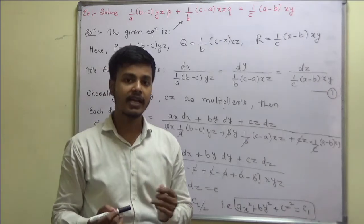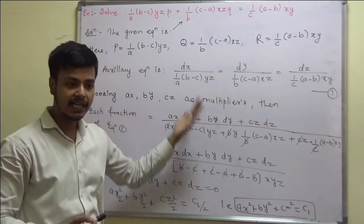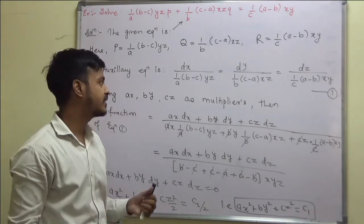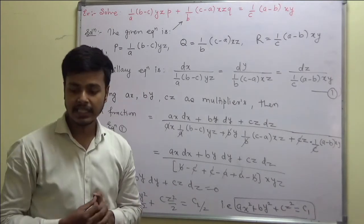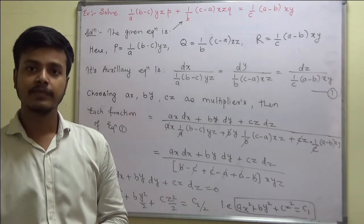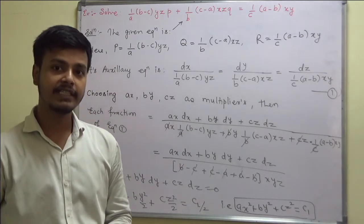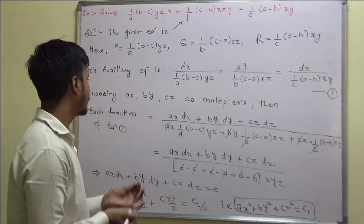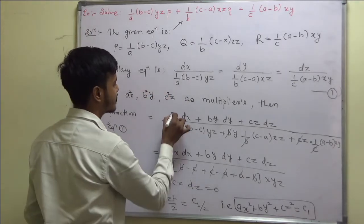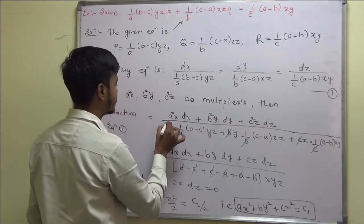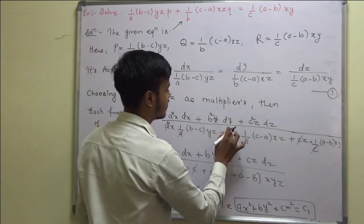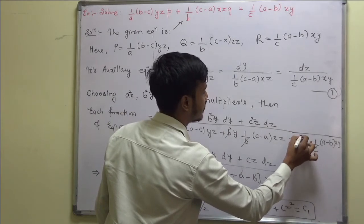Now I want you to try for the multipliers to get the second integral solution. Again pause the video for a few seconds and think over it, what multipliers we can take to get the solution of this problem. I hope you might have got the multipliers. What multipliers you have taken? a²x, b²y and c²z. So a gets cancelled, one remaining: a²x, b²y and c²z.